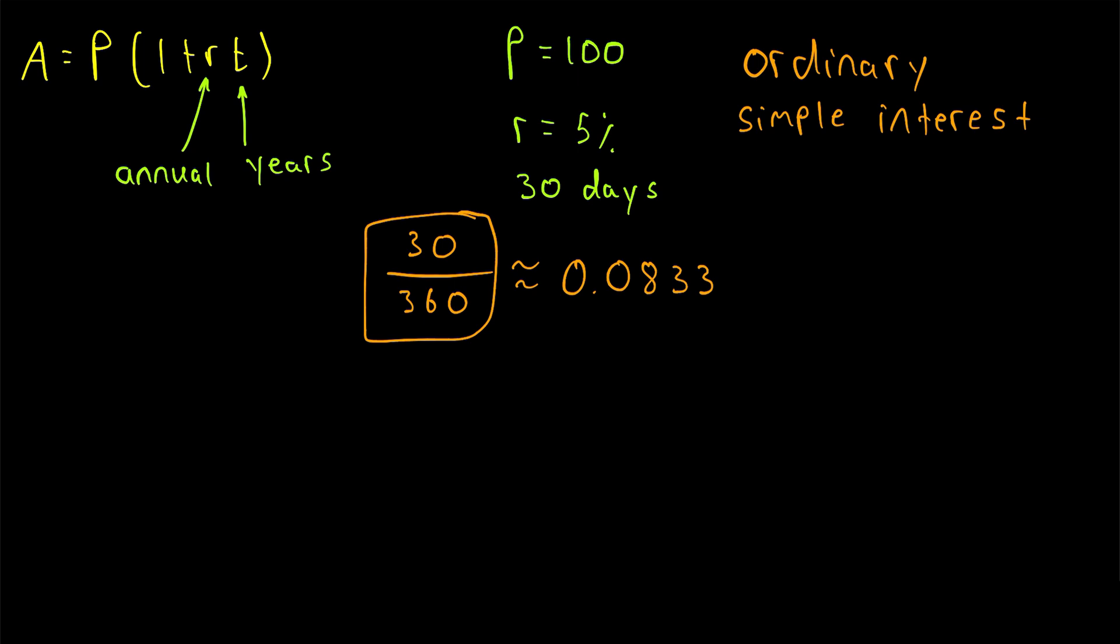This convention made calculations by hand easier and quicker, and it's still used by some institutions today. So in today's Wrath of Math lesson, we'll just go over a couple more examples of calculating ordinary simple interest to make sure we've got it down. Notice that all else being equal, calculating ordinary simple interest is going to be greater than calculating interest with the division by 365, which is called exact simple interest.